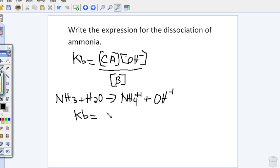that equals the conjugate acid concentration. You would put NH4-plus, that's your conjugate acid, times the hydroxide OH-minus concentration, divided by your base, in this case NH3.